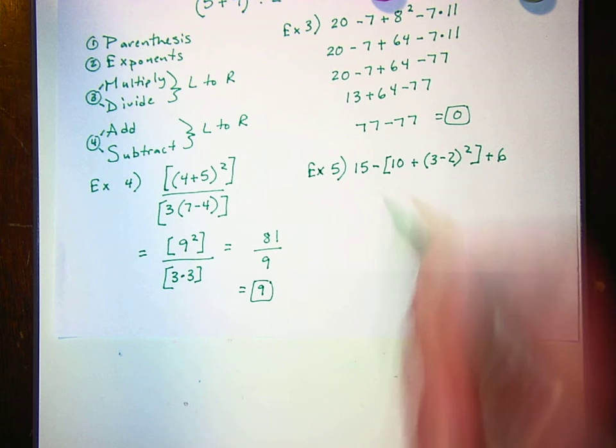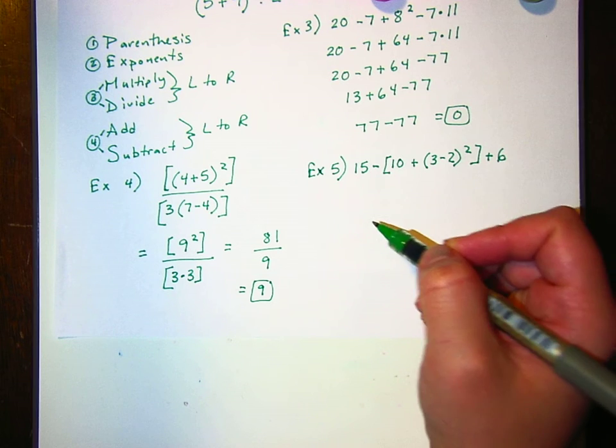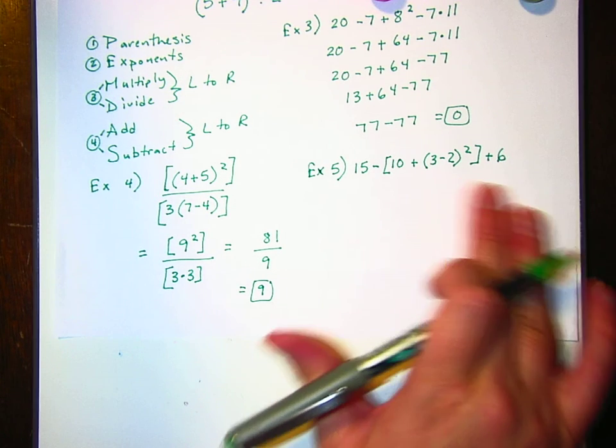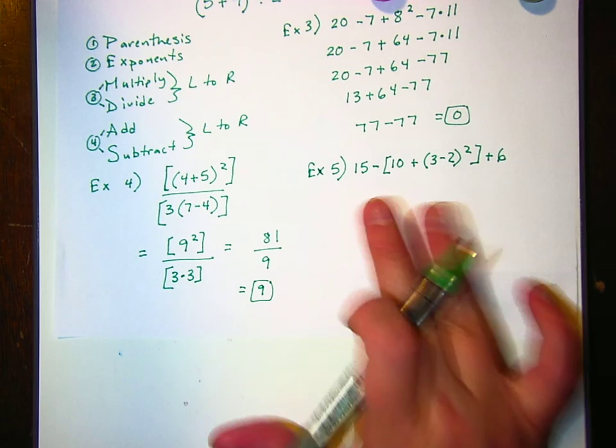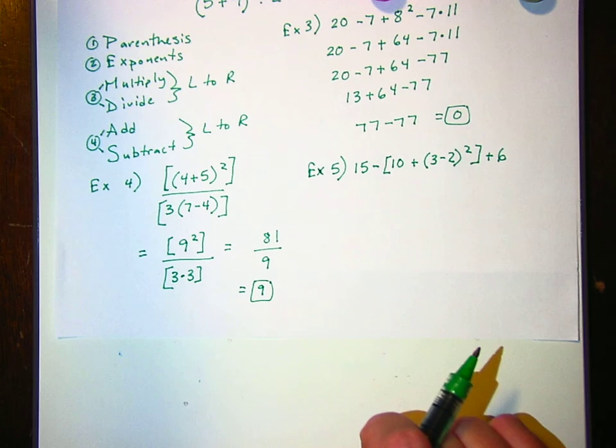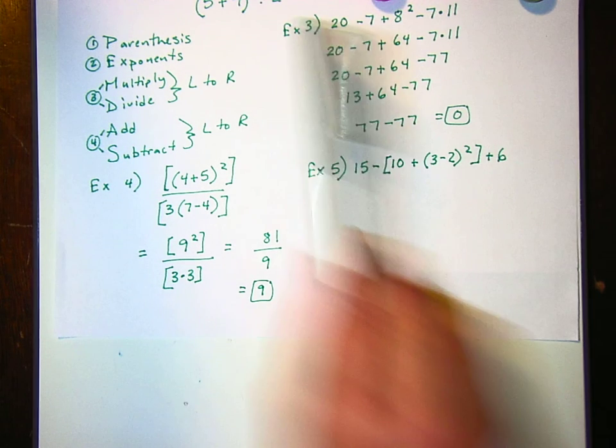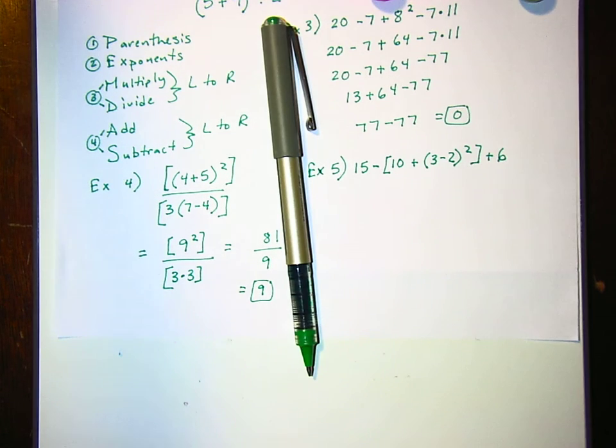And the first four people who get this right get I'm a winner signs. I'm looking for four people in this class who can get this right. All right. That's it. You have no homework tonight.